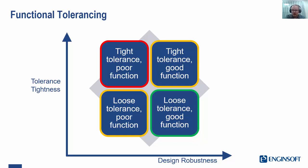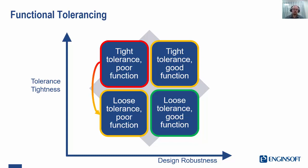It may also allow dimensions that are unimportant to be identified and the tolerances to be relaxed. For instance, we may have tight tolerances but in the wrong places, which might lead to poor function — as shown in our box on the top left. Expanding on this, we might have some loose tolerances with poor function, which can be okay but we probably want to improve upon that.